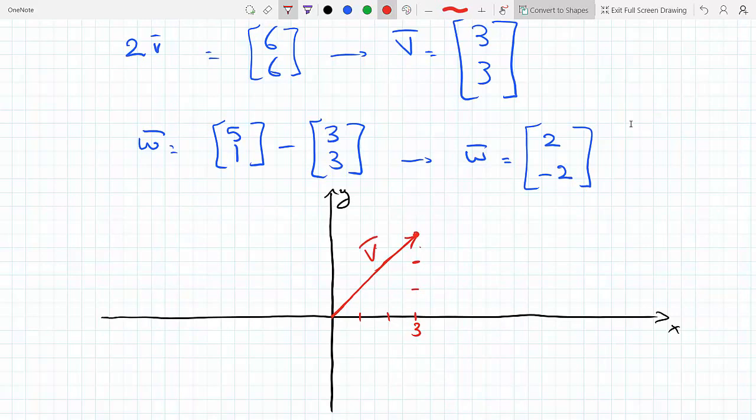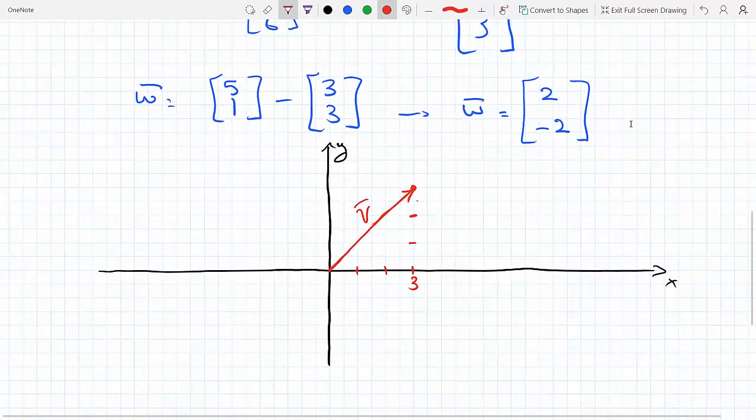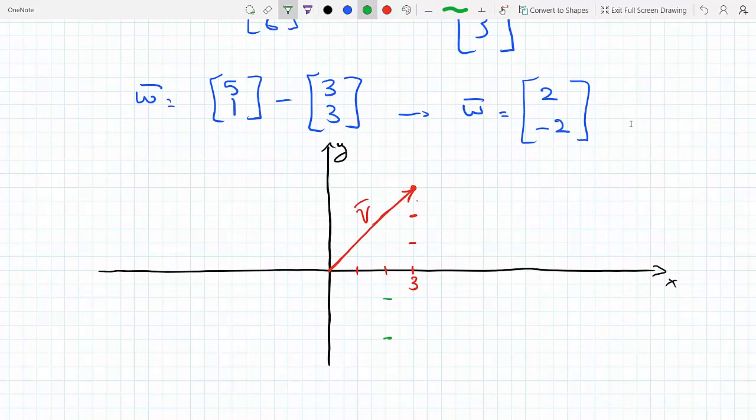And w, same thing. I would go, so w is [2,-2], so I would go 2 to the right, 2 down, 1, 2. This here is, this is 3, and this is negative 2. And then I would join the origin to that point and this would be the tip of my vector.